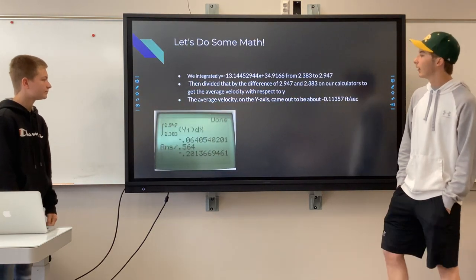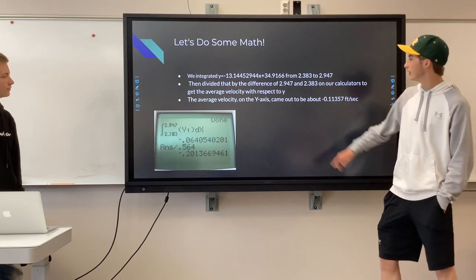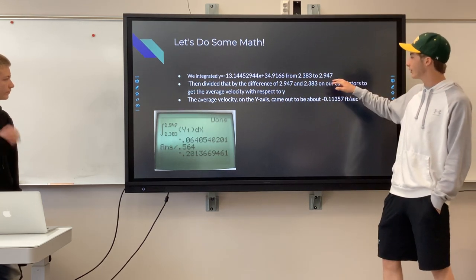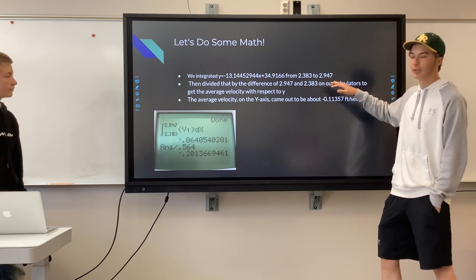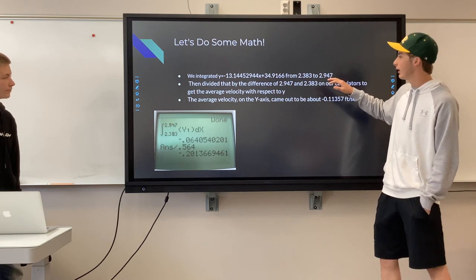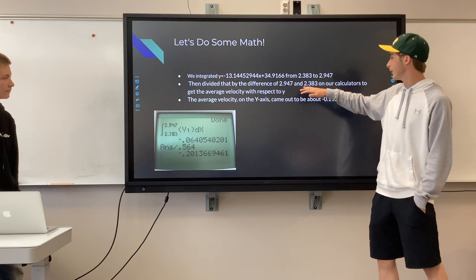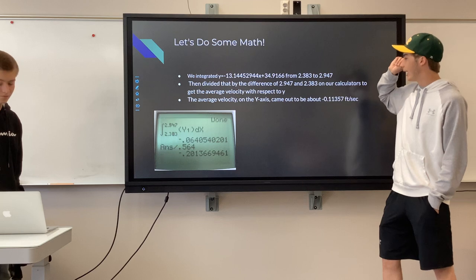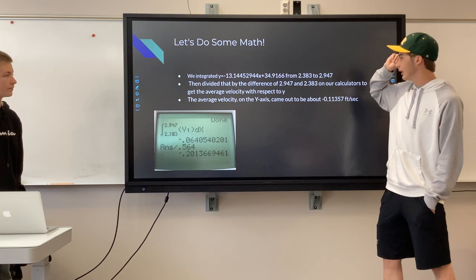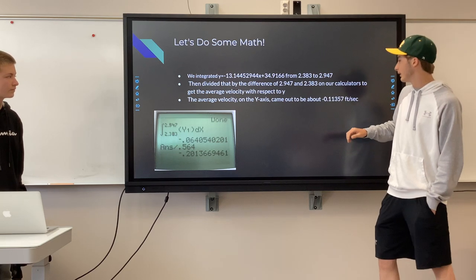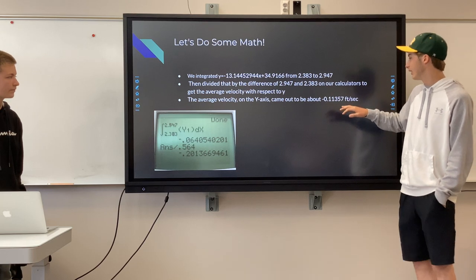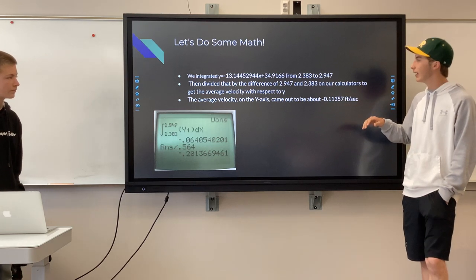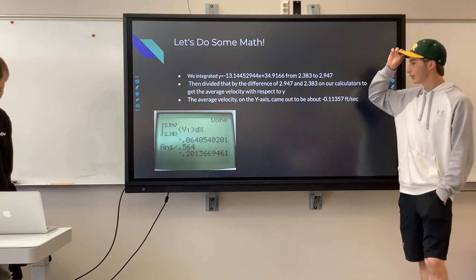We integrated the velocity function from 2.383 to 2.947 — the time stamps for when the ball was thrown and received — then divided by the difference in time to get the average velocity with respect to y. The average velocity on the y-axis came out to be about negative 0.11357 feet per second, which is about how fast the fastball moved up and down throughout the throw.